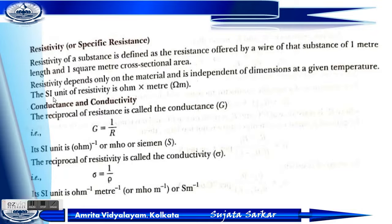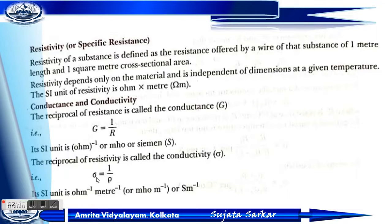Conductance and conductivity — the reciprocal of resistance is called conductance, denoted as G equals 1 divided by R. The SI unit is Siemen or Mho. The reciprocal of resistivity is called conductivity, denoted as σ equals 1 divided by ρ, with unit Ohm⁻¹ meter⁻¹.